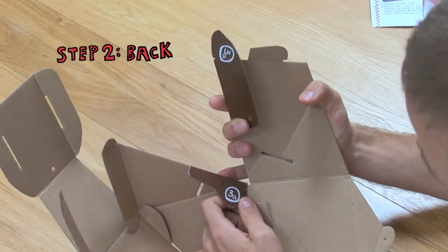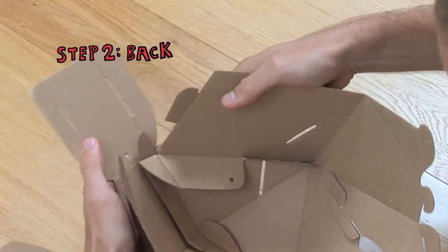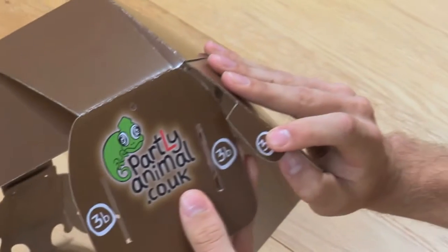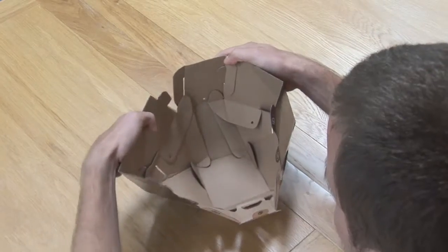Making sure both tabs marked three A are on the inside, fold in one end of the boomerang, then fold in the end of the anchor. On the back, insert tab 3C into slot 3B, and repeat for the other side.